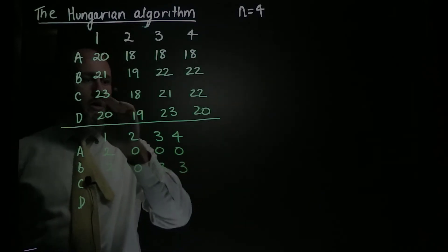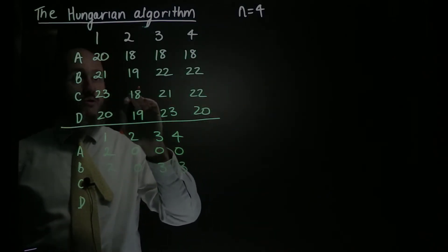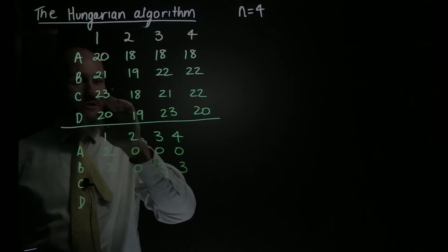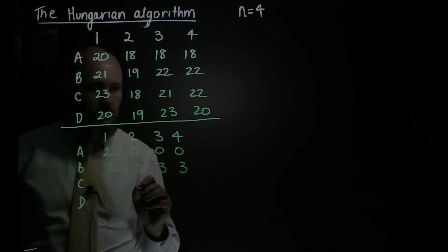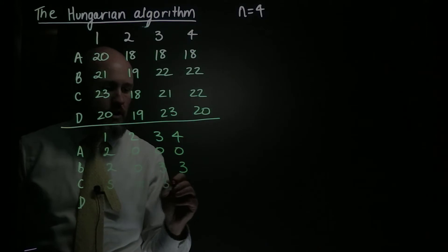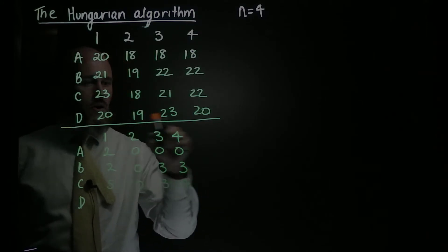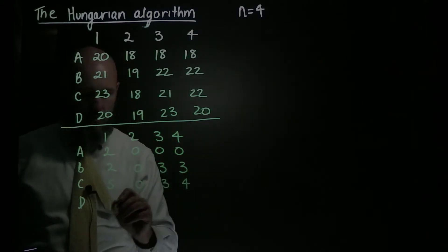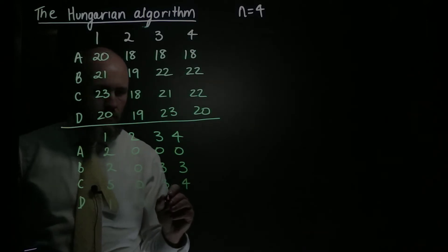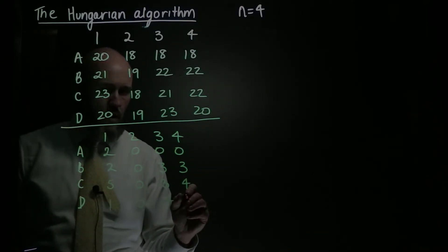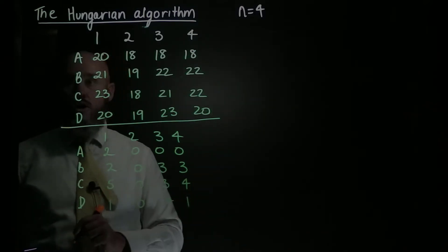19 is my minimum in row B, giving me 2, 0, 3, 3, and 18 is my minimum in row C, so I'm going to subtract 18, giving me 5, 0, 3, 4, and then 19 is my minimum here, which gives me 1, 0, 4, 1. So I've done my row reduction.